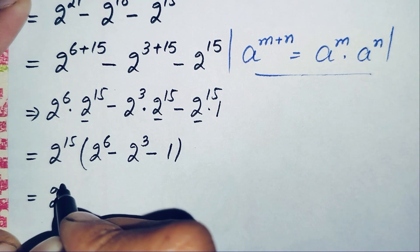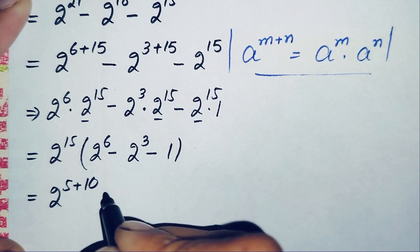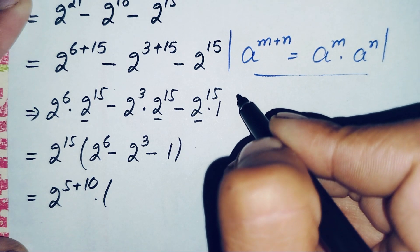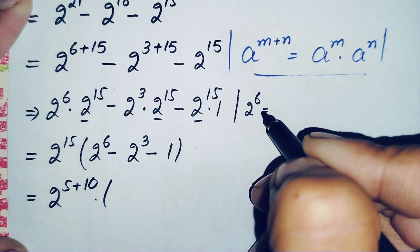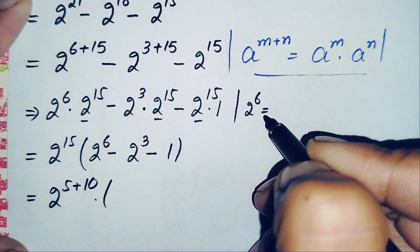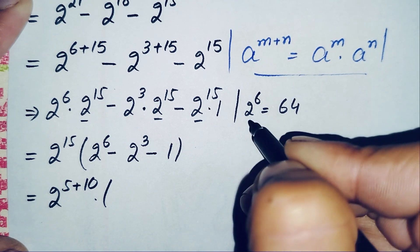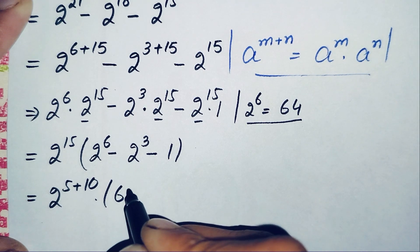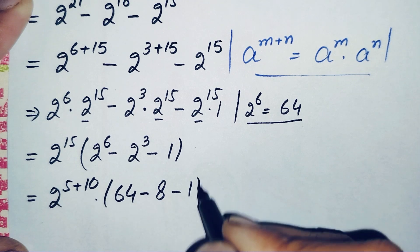We can write 2 raised to power 15 as the sum 5 plus 10. Now the value of 2 raised to power 6: 2×2=4, 4×2=8, 8×2=16, 16×2=32, 32×2=64. So 2^6 = 64. And 2^3 = 8. So the bracket becomes 64 minus 8 minus 1, which gives 55.